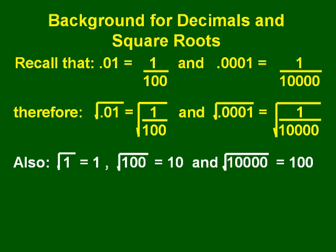We know the square root of 1 is 1 and the square root of 100 is 10. When finding square roots, you're thinking what times itself equals the radicand — the number inside the square root. We know 10 times 10 is 100. The square root of 10,000, using our rule about zeros: there are four zeros inside the square root, so our answer has two zeros, giving us 100.